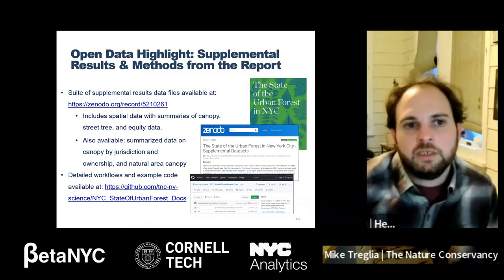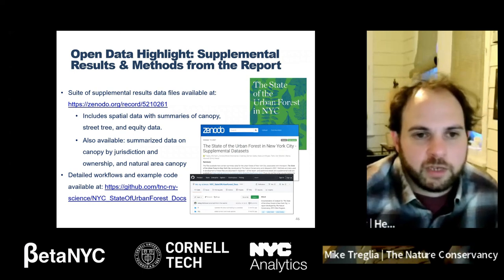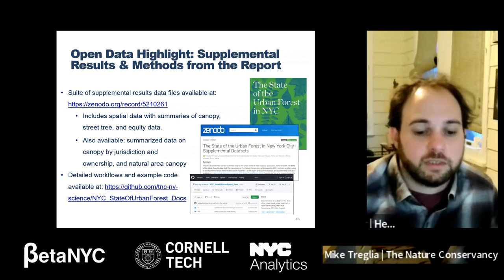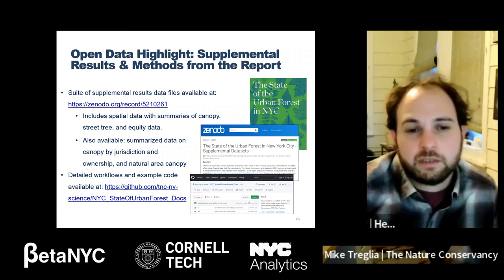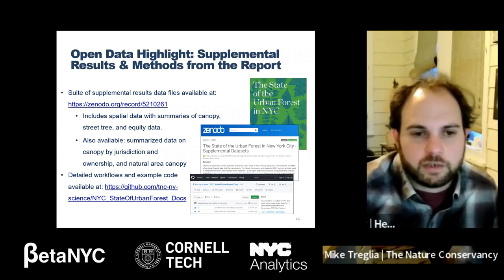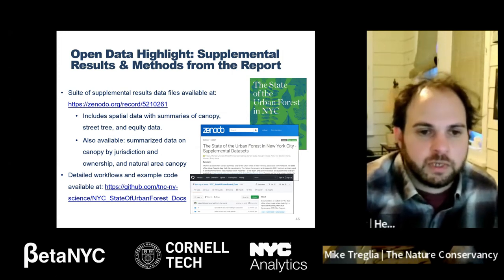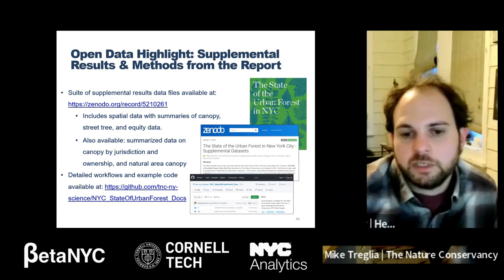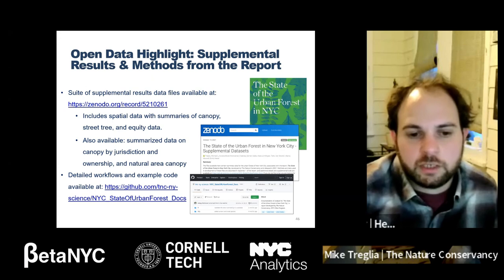Before we begin Q&A, I want to highlight that we've done a lot of analysis in this report and we've made available supplemental results data files — both spatial data and non-spatial data — showing by borough, community district, and neighborhood tabulation area things like street tree dynamics and canopy dynamics across the city, as well as some equity data. There's also data available to download and use on canopy by jurisdiction and ownership and whether it's in natural areas or not. We have detailed workflows available not just in an appendix of the report, but also available on GitHub.